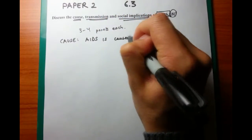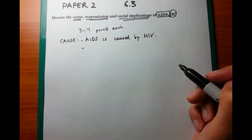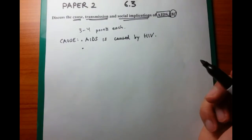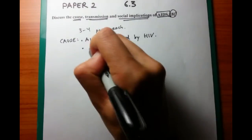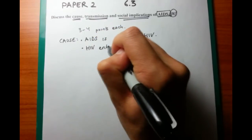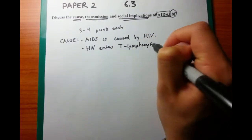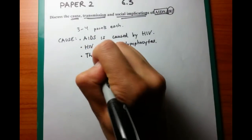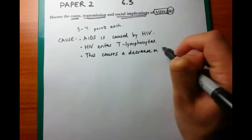Moving straight on into the cause. AIDS stands for Acquired Immunodeficiency Syndrome, and it's caused by HIV, or the Human Immunodeficiency Virus — kind of like how if you have the flu, it's caused by the influenza virus. One's a disease, one's the pathogen. The way it works is that HIV enters the T lymphocytes and actually destroys them, causing a decrease in T lymphocytes over the long term.